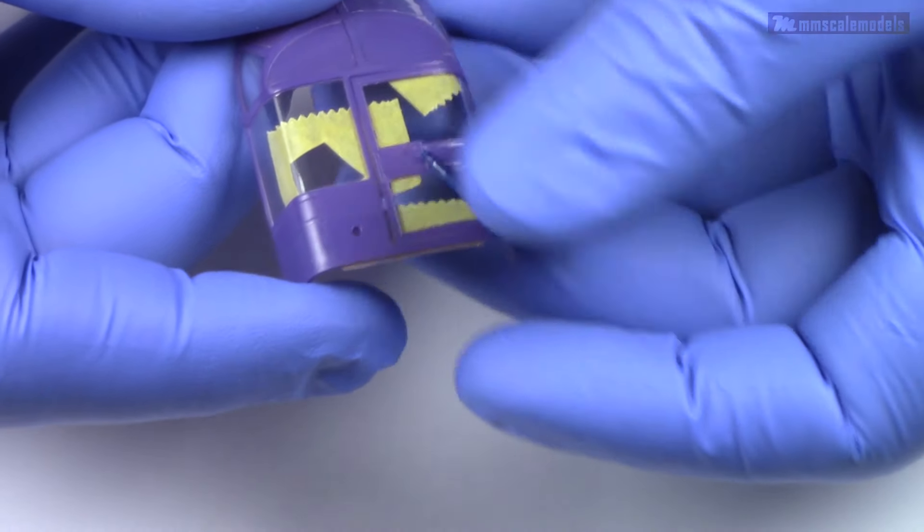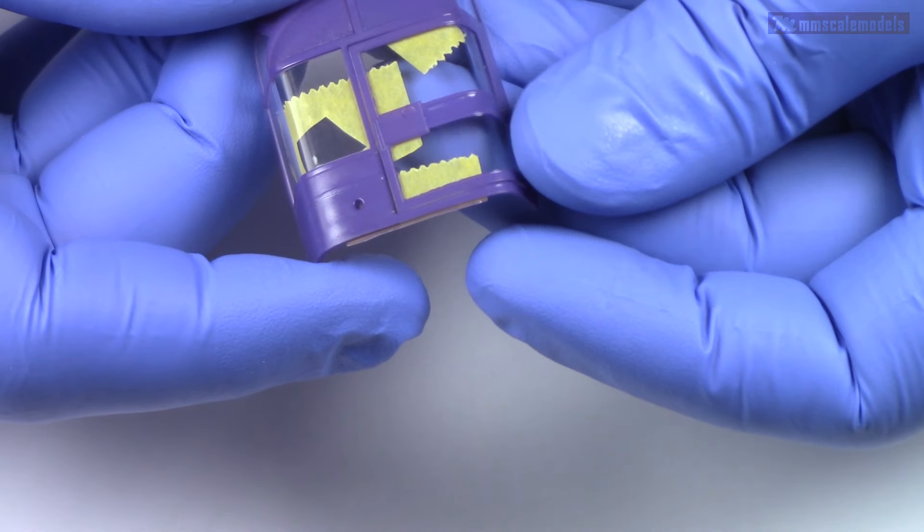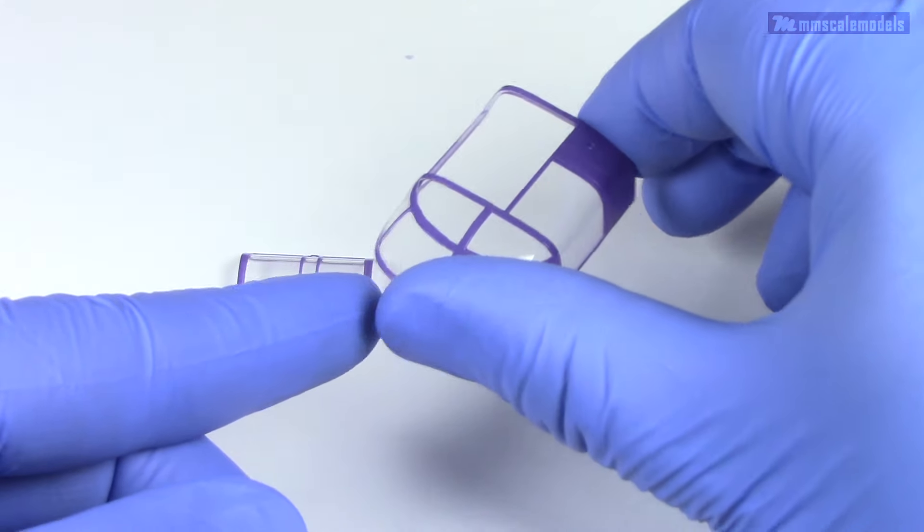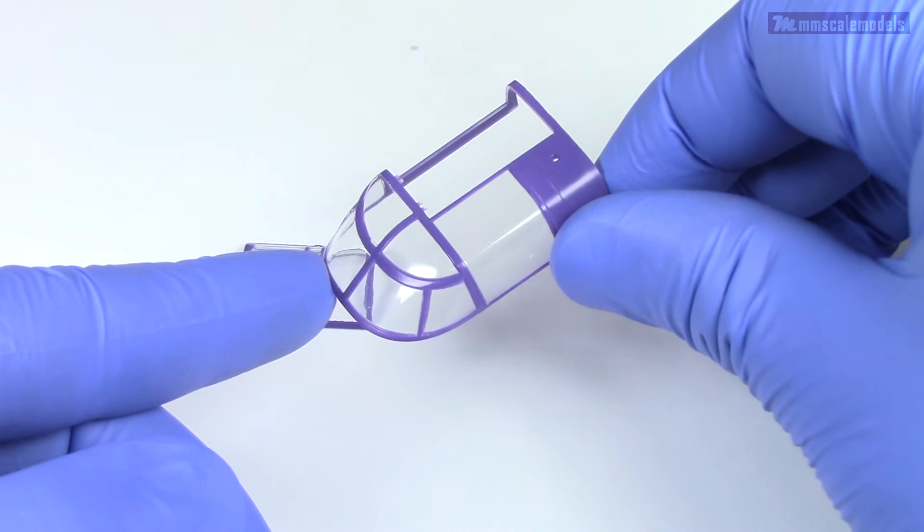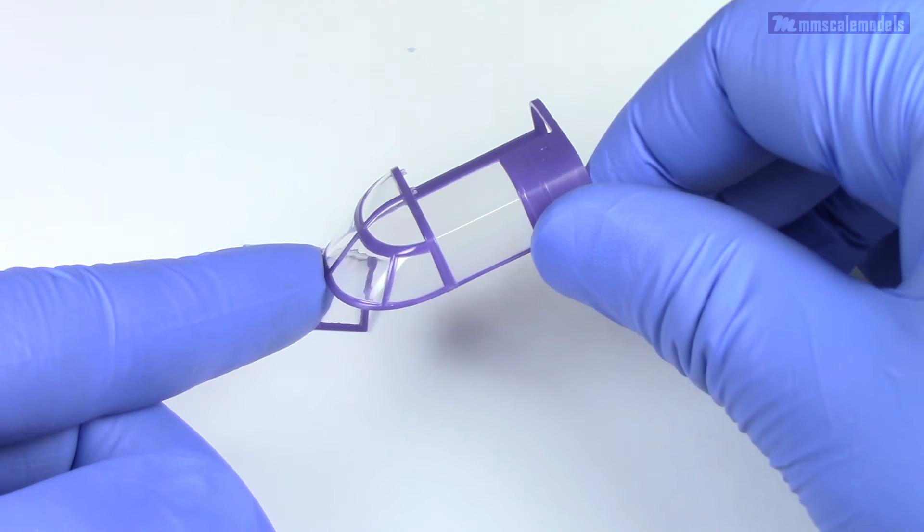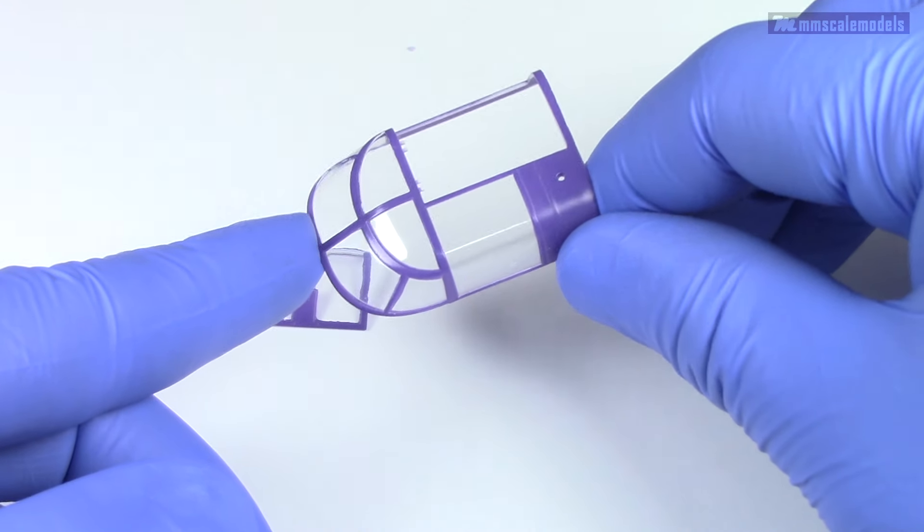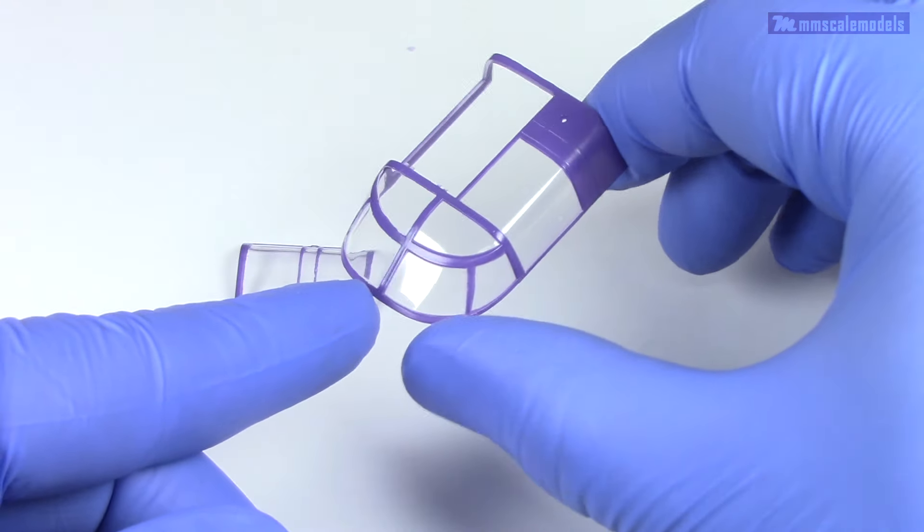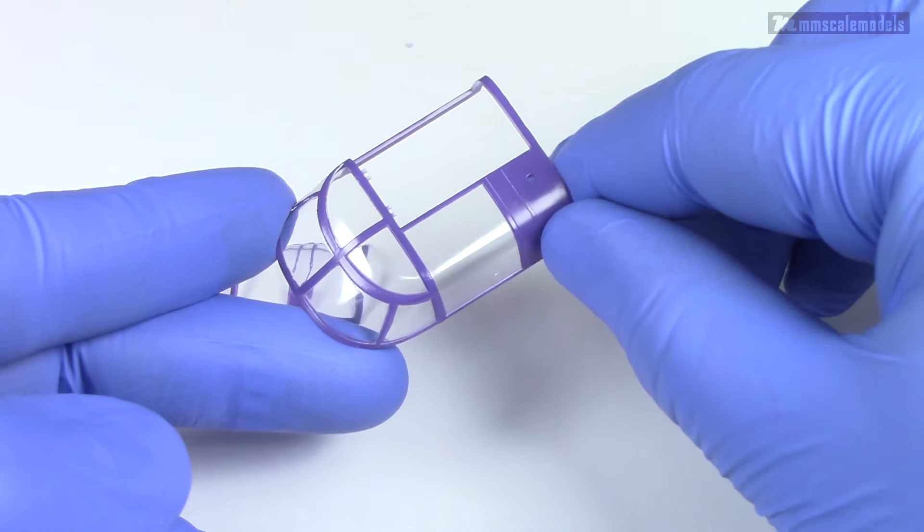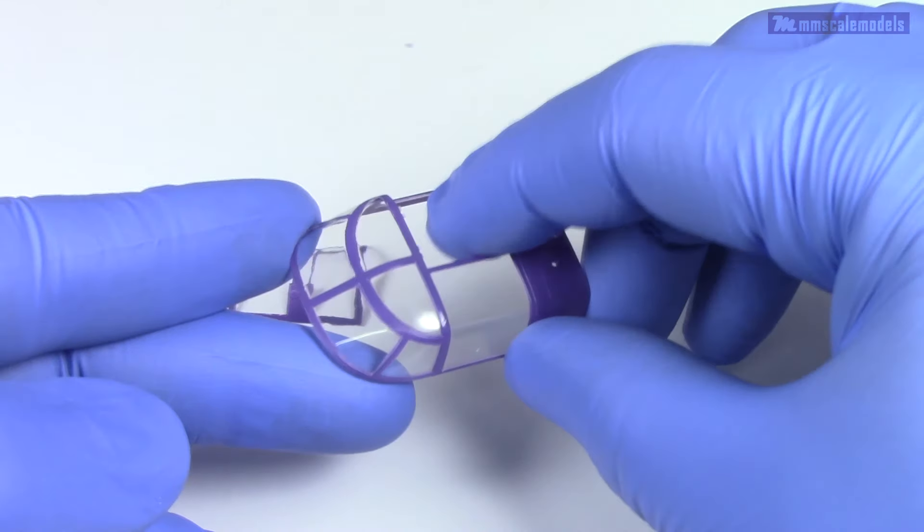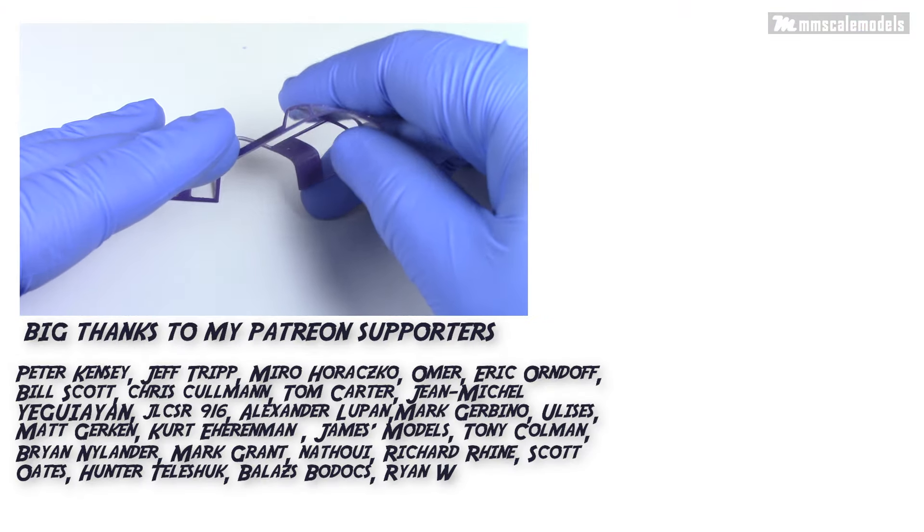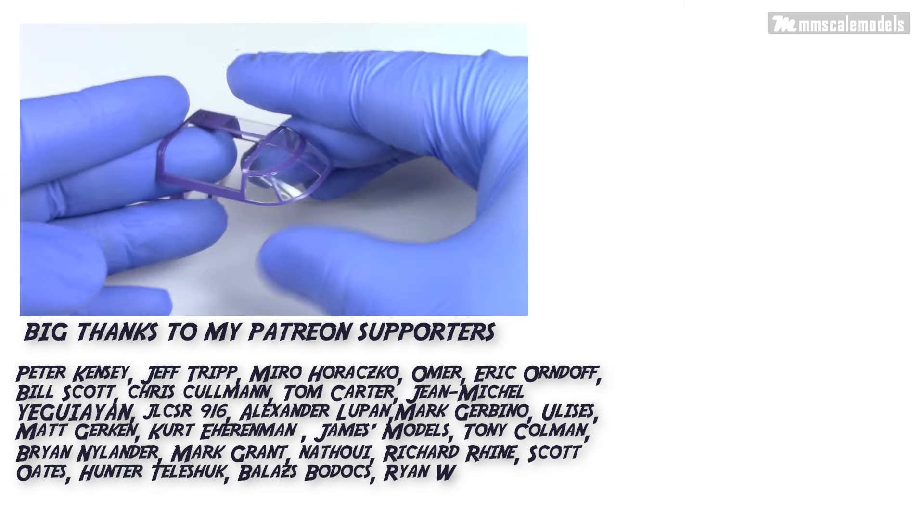While things look okay from the distance, when you get close to the detail the issues are visible with both techniques. The masking fluid fails at creating crisp edges, both because of unevenness due to application and inability to cleanly cut the paint on removal. And I already outlined the disadvantages of cutting the tape directly on the canopy. That's why I strongly recommend my other masking tutorials.